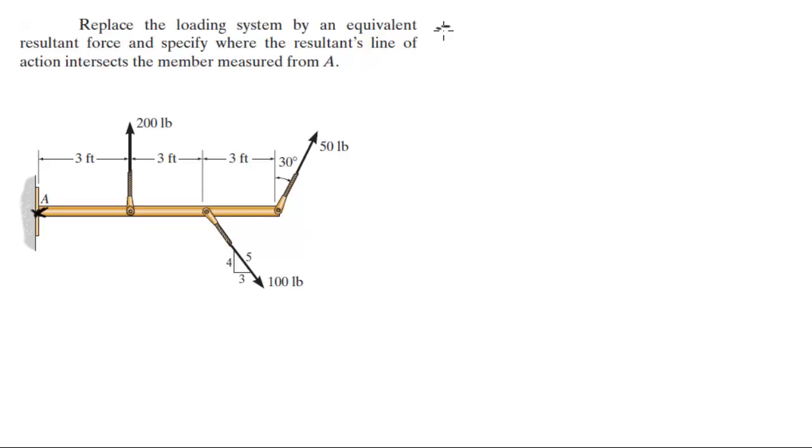The sum of the forces in the X are equal to 100 times 3 over 5 plus 50 sine of 30. 50 sine of 30 will be the X component of this force and 100 times 3 over 5 will be the X component of this hundred pound force. This sum comes out to be 85 pounds.